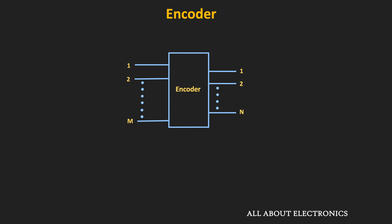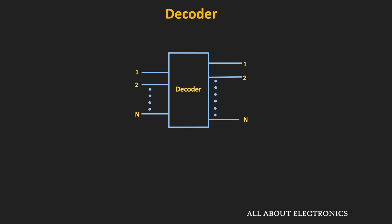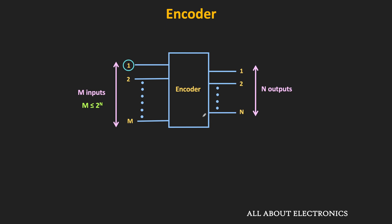The binary encoder is a combinational circuit which has n outputs and 2 to the power n or fewer inputs, and its operation is exactly reverse of the decoder. In the decoder, we have n inputs and 2 to the power n or fewer outputs, and only one output is high per input combination. In the encoder, exactly the reverse happens, and it is assumed that at any given time only one input is high. Depending on which input is high, we get a specific code at the output.